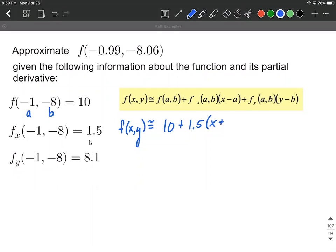Plus the partial derivative with respect to y at negative one, negative eight, which is 8.1, times y minus our b value. Y minus negative eight is y plus eight.